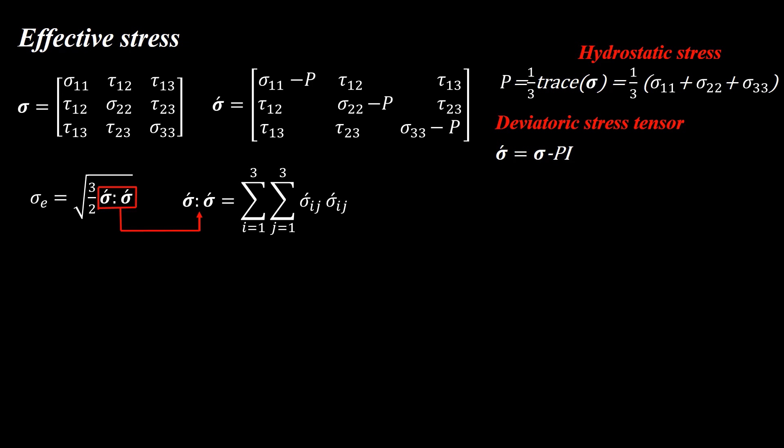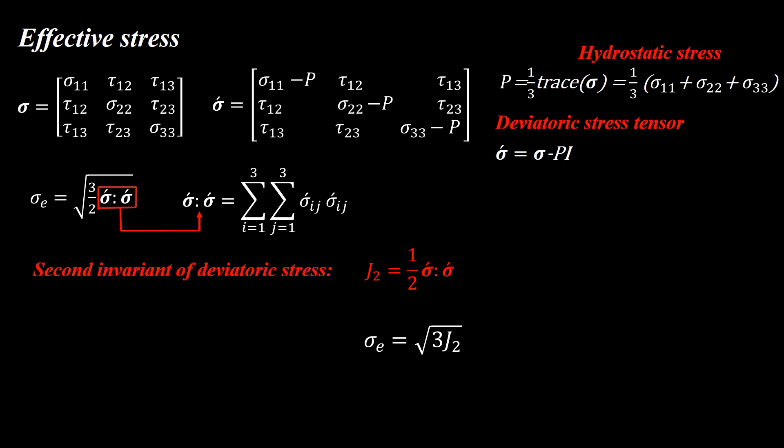The double contracted product of two tensors means multiplying them component by component and summing the terms to give a scalar — in other words, this product contains a summation of nine terms. It is interesting to note that the formula for the second invariant of the deviatoric stress tensor, J2, is similar to the Mises effective stress. We can write the relationship between effective stress and J2, which is why this criterion is sometimes called J2 plasticity.